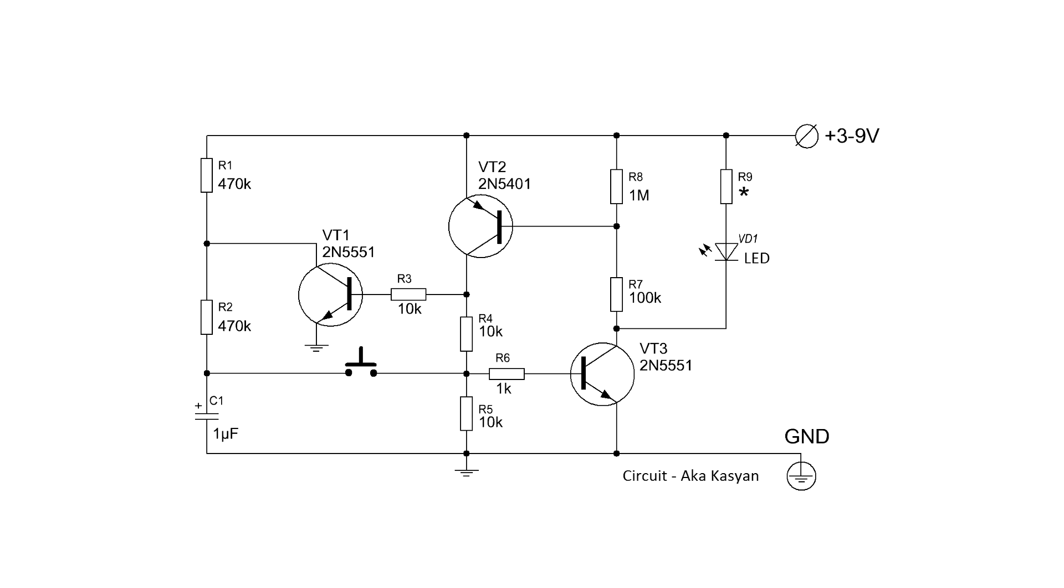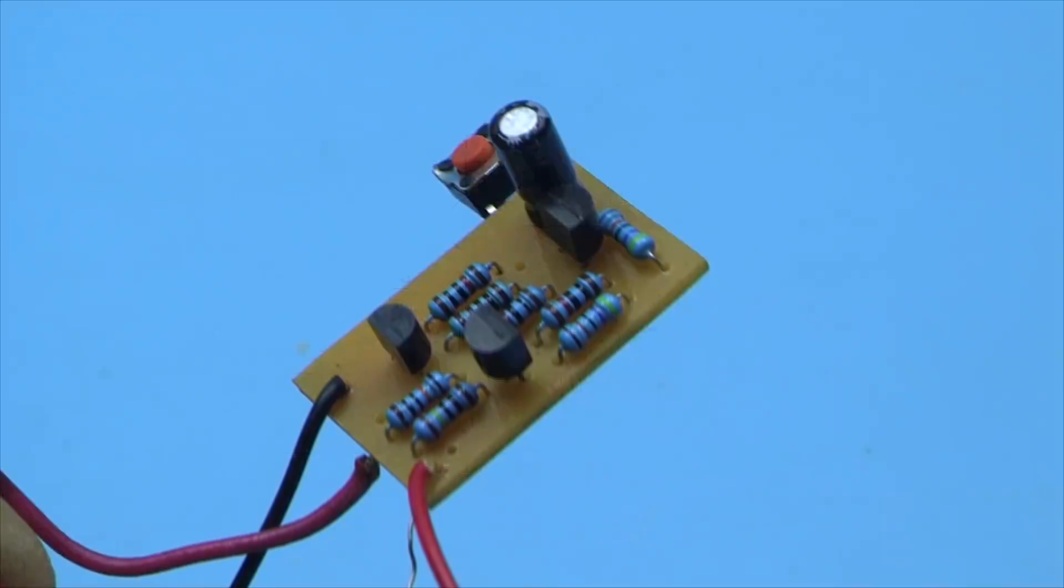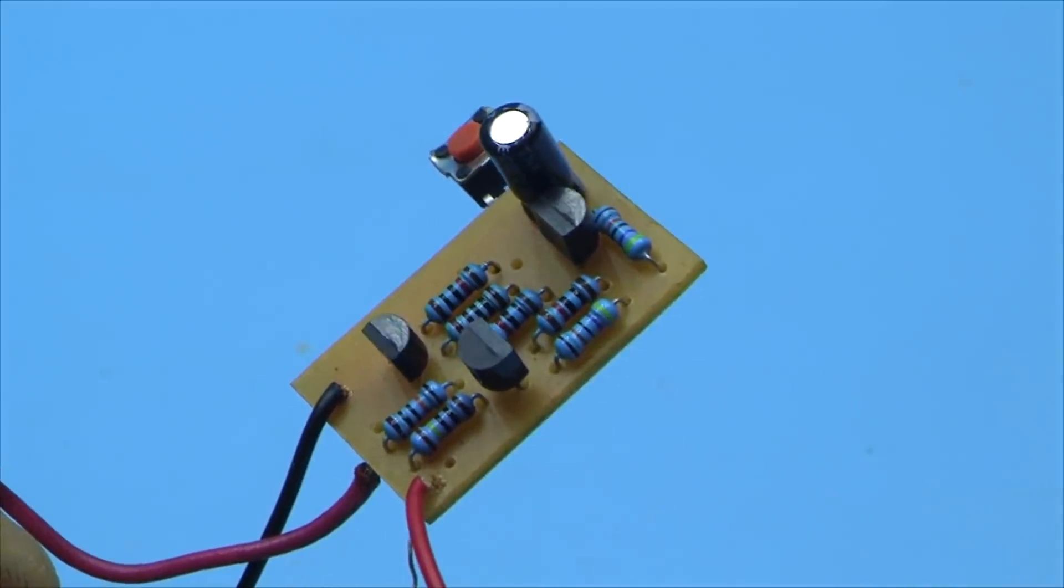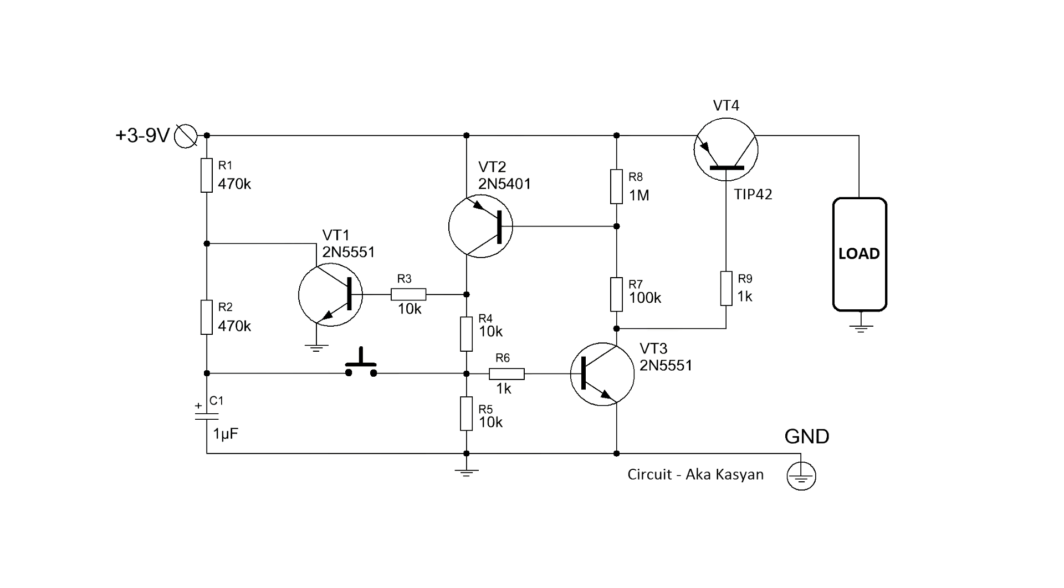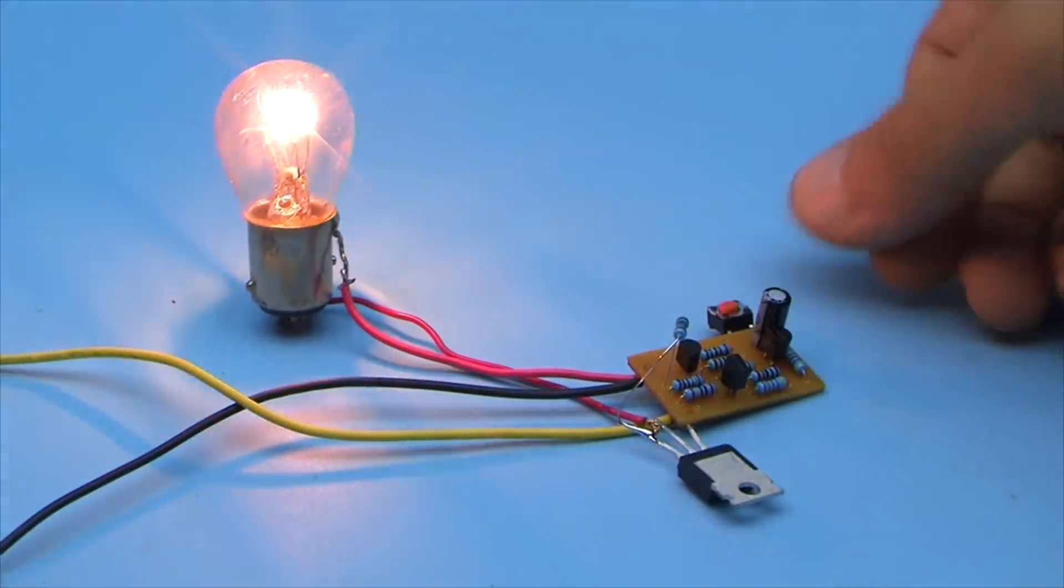The load is switched by a transistor VT3. By the way, it can be taken more powerful, for example, BD139. In this case, we will be able to connect more powerful loads to the circuit. Or you can amplify the signal from the output with an additional transistor.